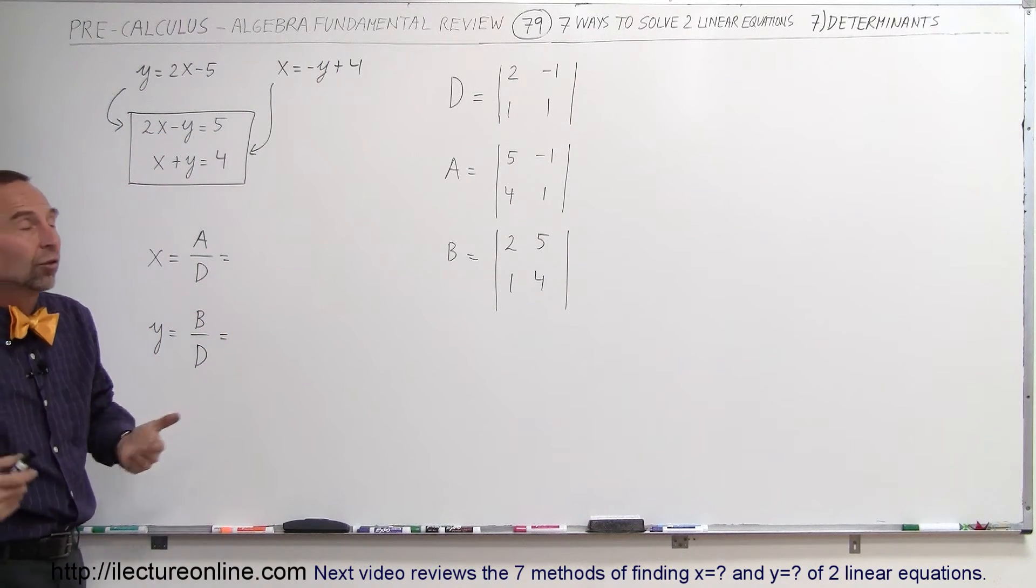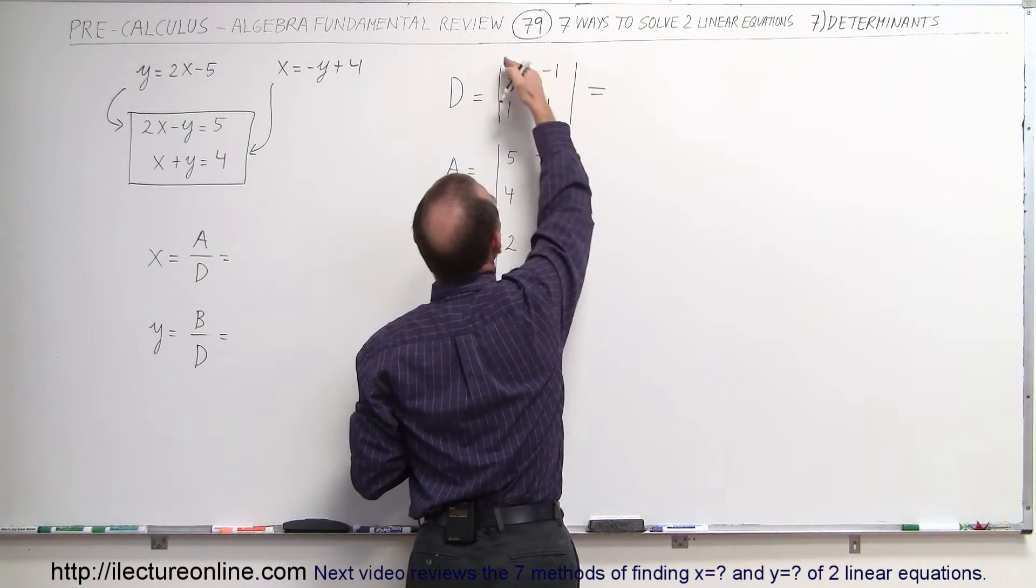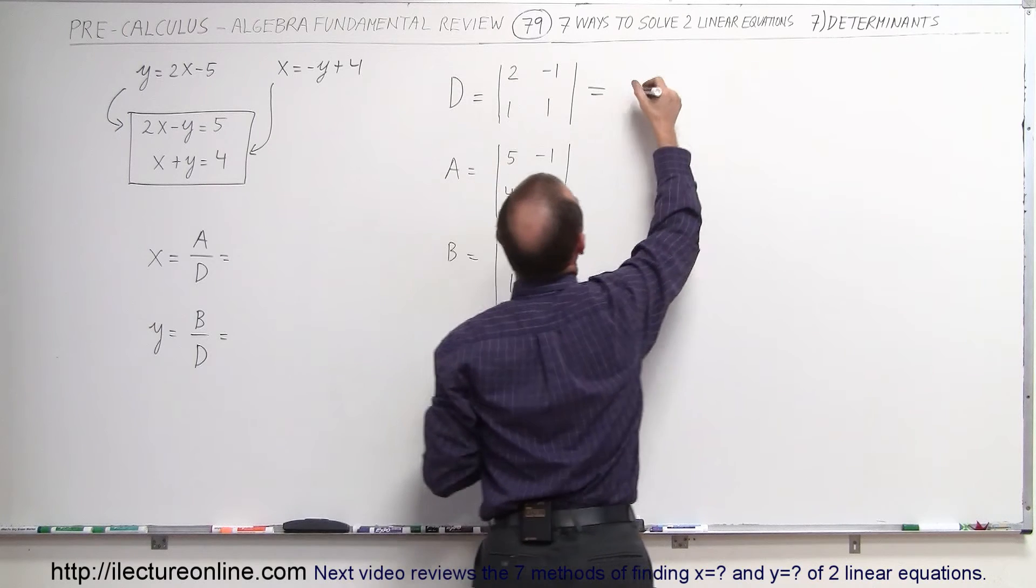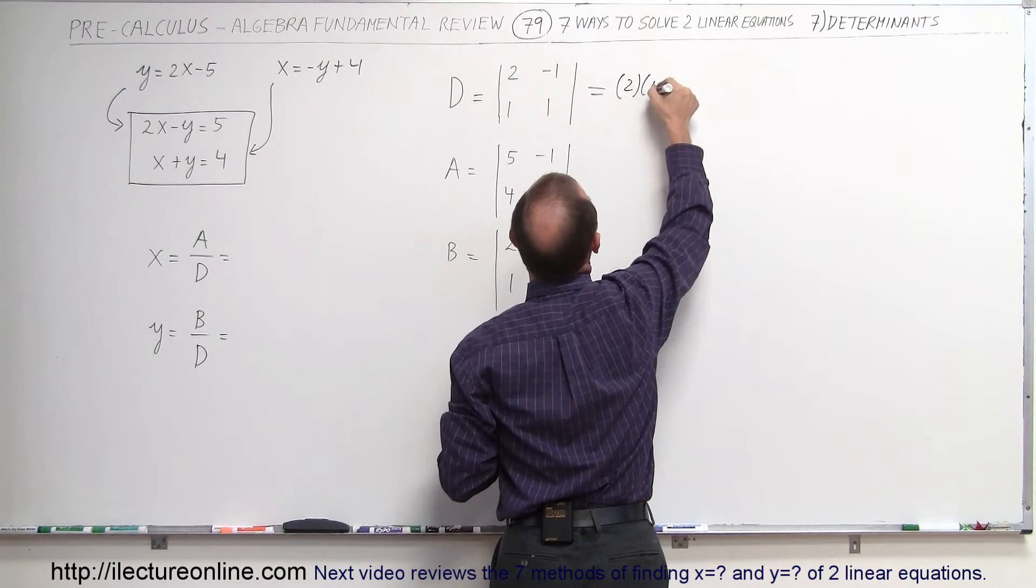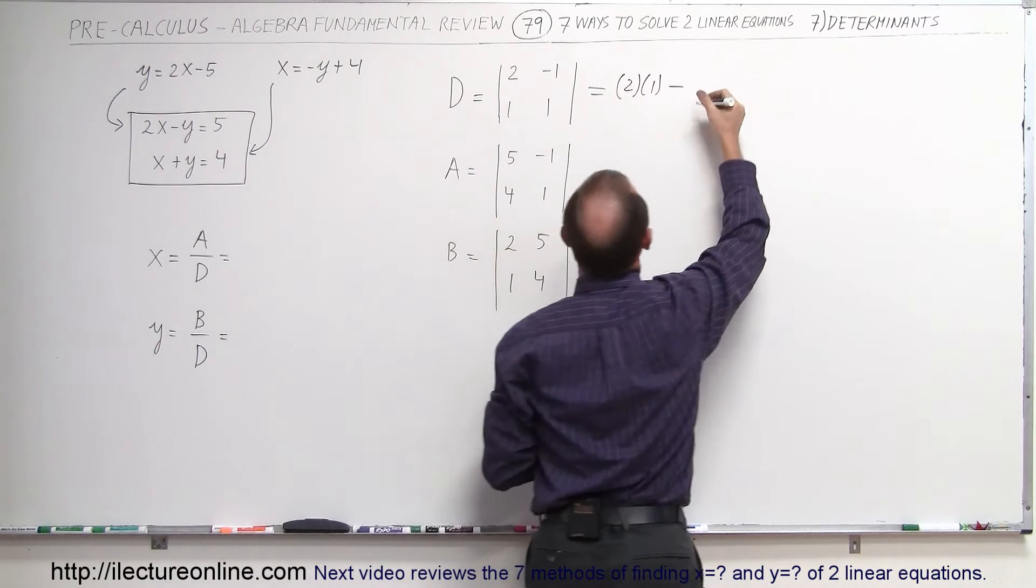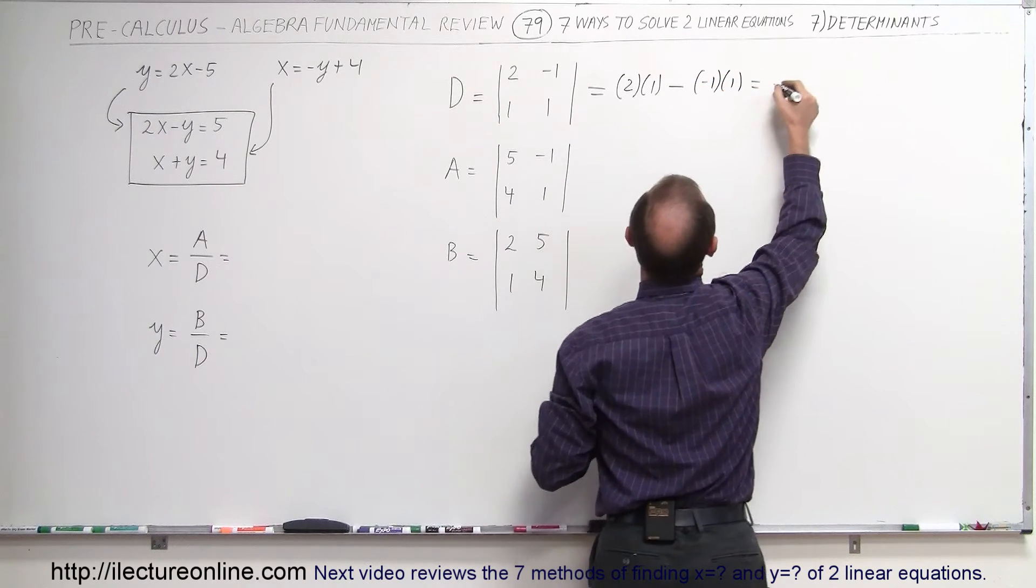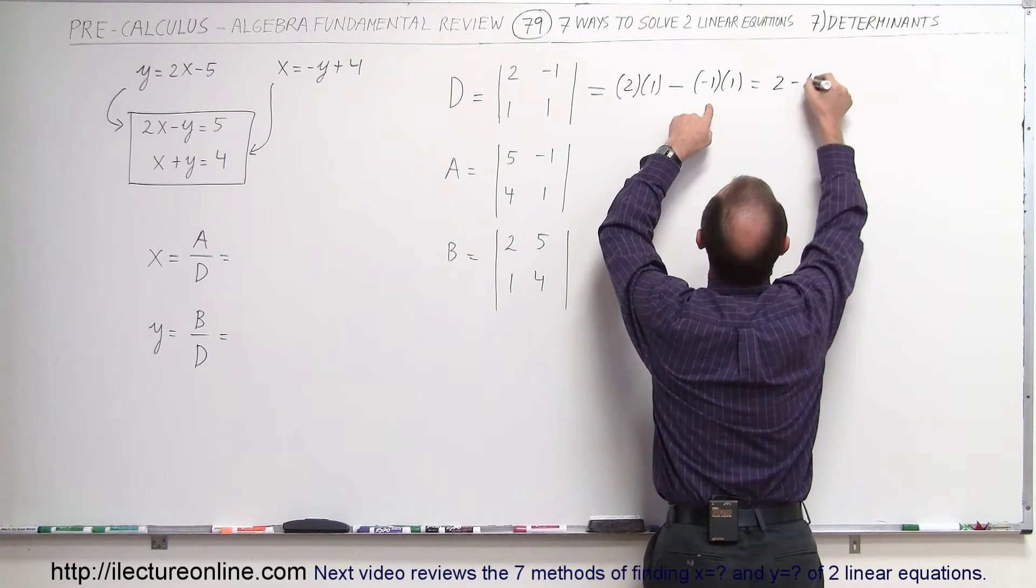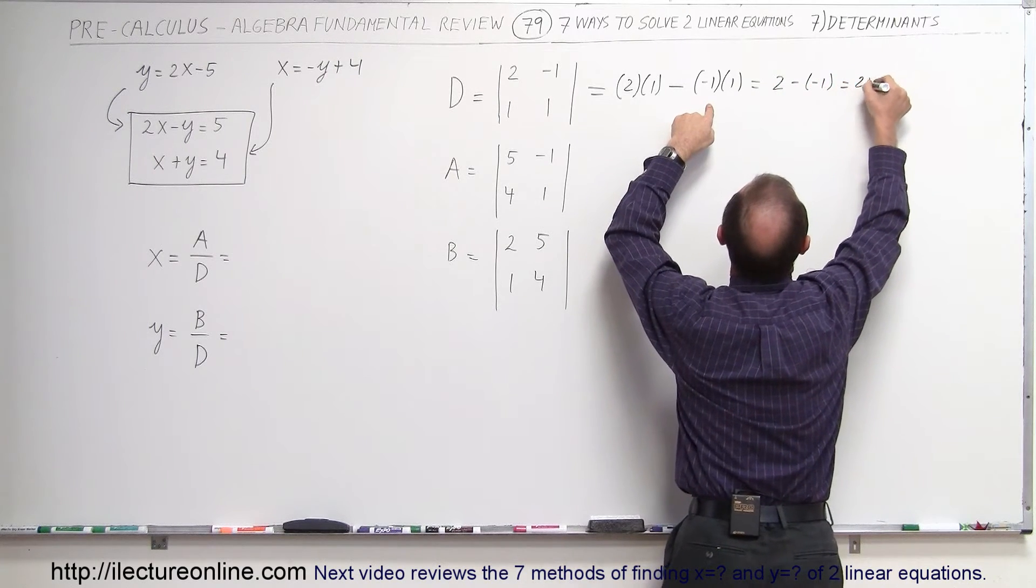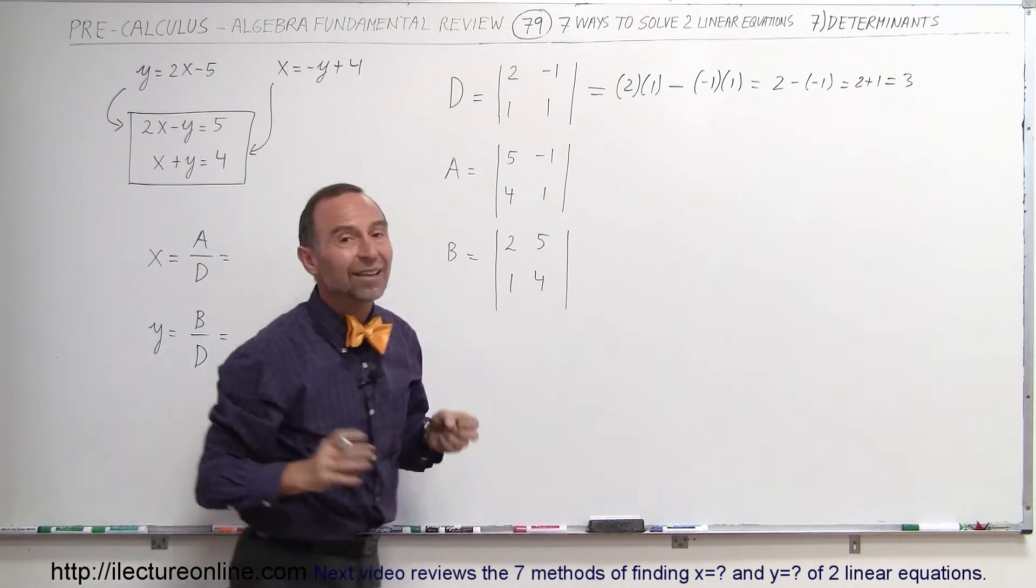Now how do you solve the determinants? Well the determinant is solved by multiplying these two terms on the diagonal, so 2 times 1 and subtracting from that when you multiply these two terms. So that would be minus 1 and 1. So in this case that would be 2 minus a minus 1, which is 2 plus 1, which is 3. So the first determinant is equal to 3.